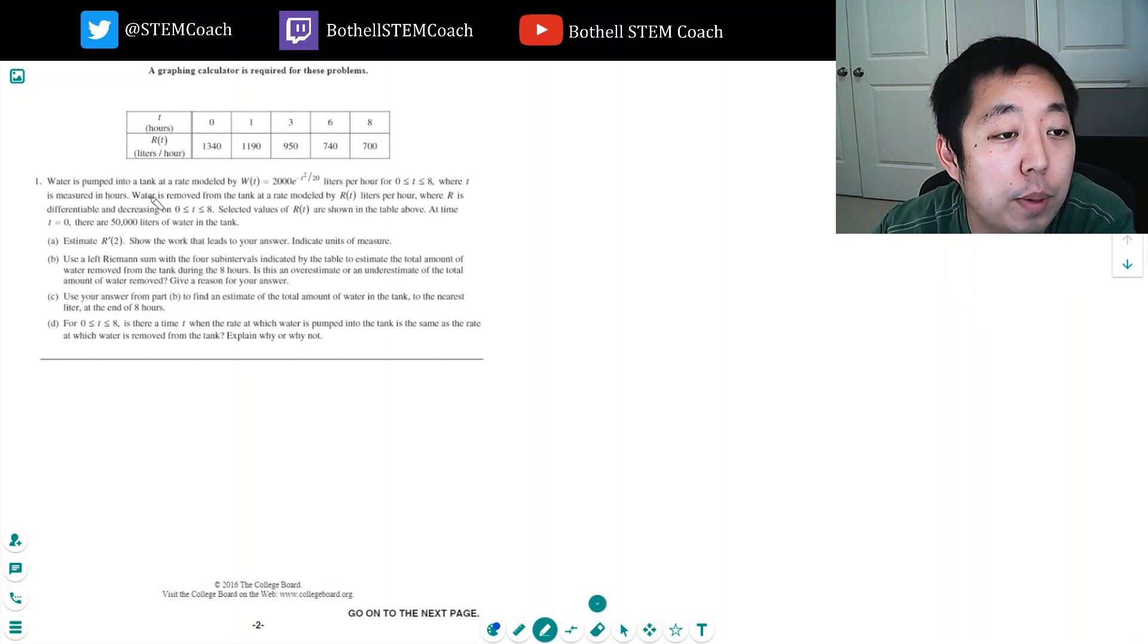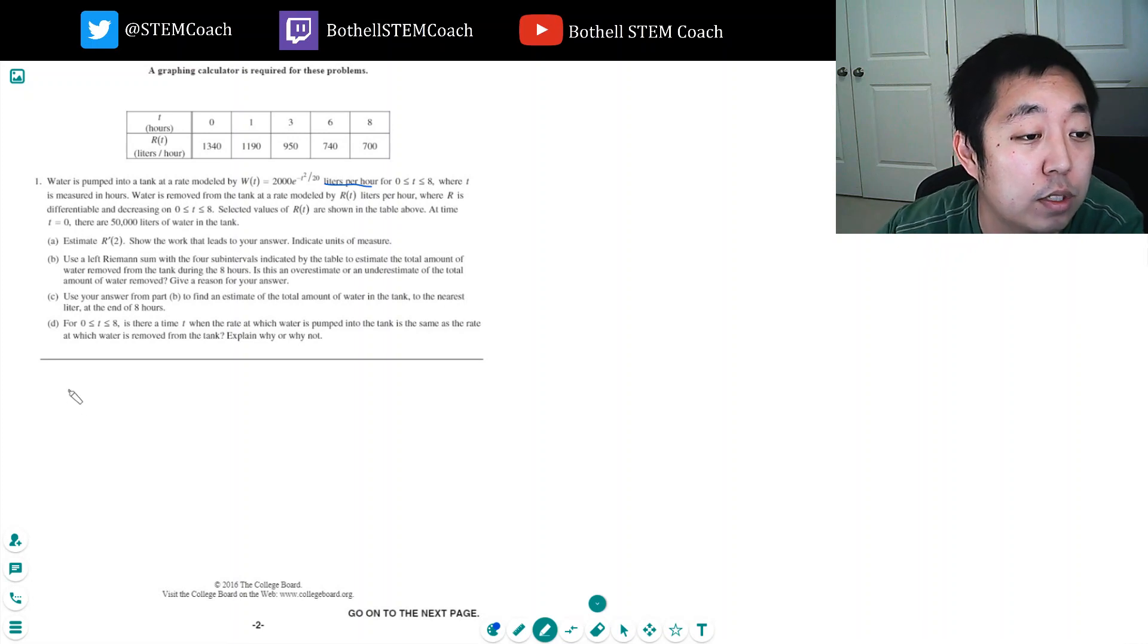Water is pumped into a tank at a rate modeled by w(t) in liters per hour, where t is measured in hours. Water is removed from the tank at a rate modeled by r(t) in liters per hour, where r(t) is differentiable and decreasing. Selected values of r(t) are shown in the table. At time t equals 0, there are 50,000 liters of water in the tank. Estimate the derivative of r at 2. Show the work that leads to your answer and give units of measure.